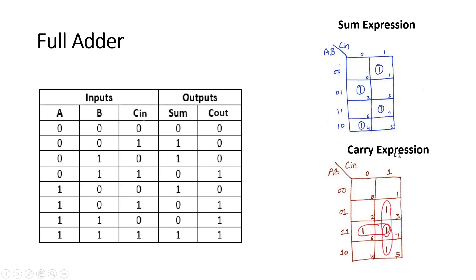Similarly, let us see the carry. Carry is high when ABC is three, so at three carry is high. When ABC is one-zero-one, that is five, carry is high. At one-one-zero, that is six, carry is also high, and at seven carry is high as well. Here we have some overlapping bits, and this is how we generate the minterms and the terms in the carry expression.